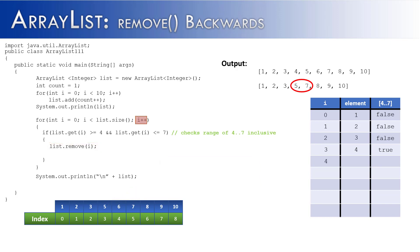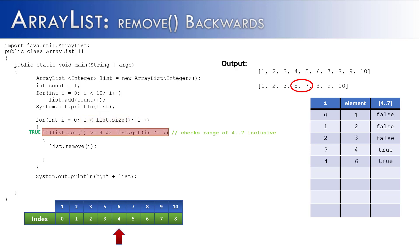As we move forward, i becomes 4, 4 is less than 9, and then the next value that we check — because i is 4 — is the element inside of the fourth index, and that would be the 6. That means the 5 never gets checked, and it still needs to be removed. Given the code that we have right now, it wouldn't remove it, as we see in the output. The same thing would also happen to the 7. When you have multiple items right next to each other that need to be removed from an ArrayList, the remove method is not going to work correctly just by itself because of resizing and elements shifting to a different index.